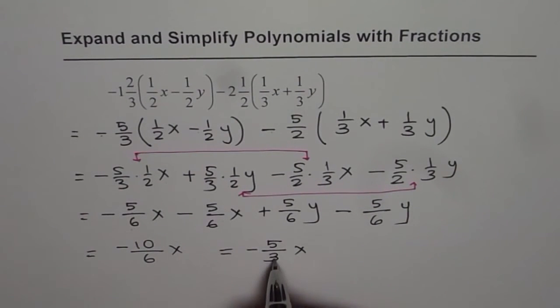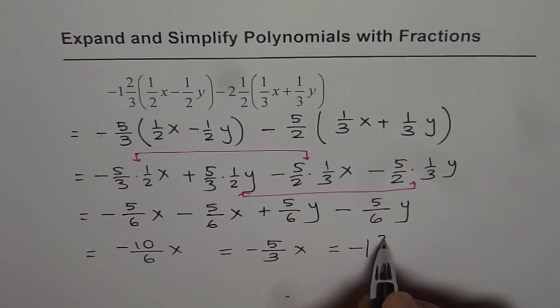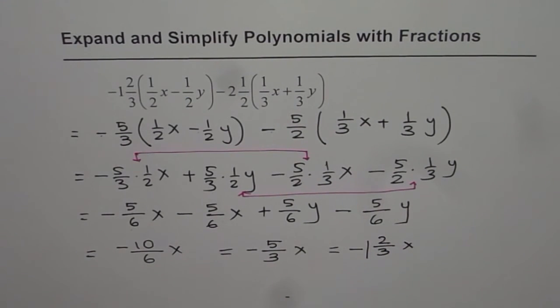Now 5/3 is an improper fraction. So it is a good idea to write it as a mixed number. 3 goes 1 time into 5 leaving remainder of 2. So we get minus 1 2/3x. So that is our answer for the given polynomial. Thank you.